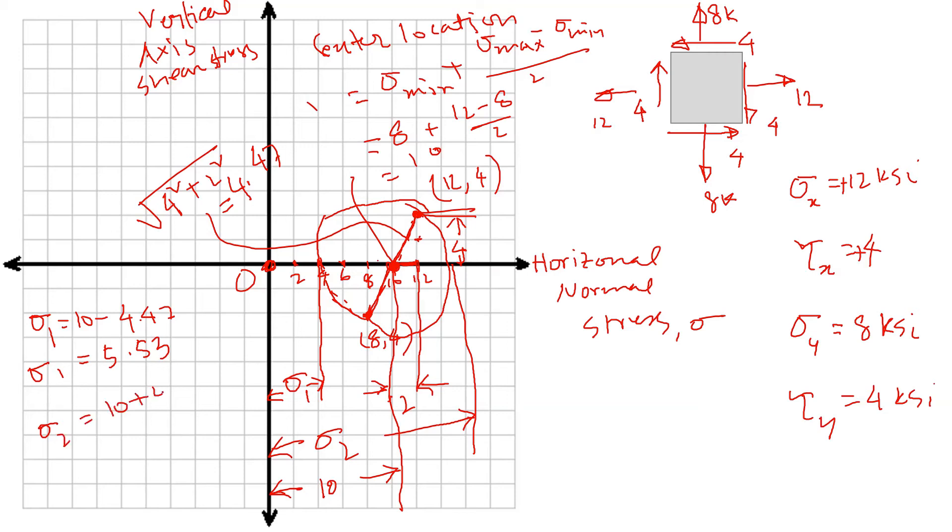So the von Mises stress I can do it here. σ_v is von Mises stress. The formula is square root of σ₁ squared plus σ₂ squared minus σ₁ σ₂. So just plug all this number in.